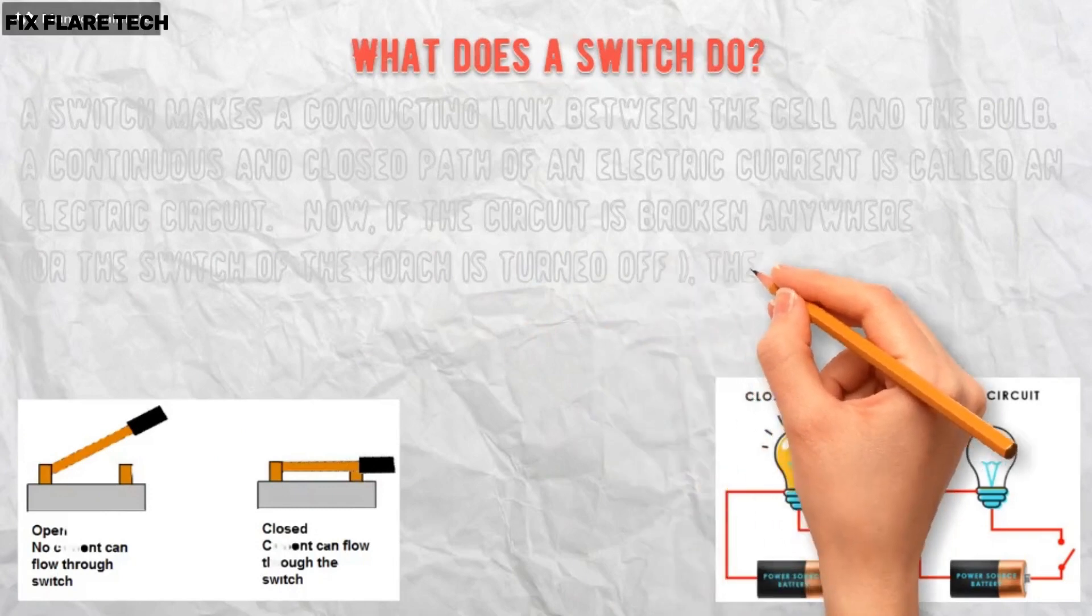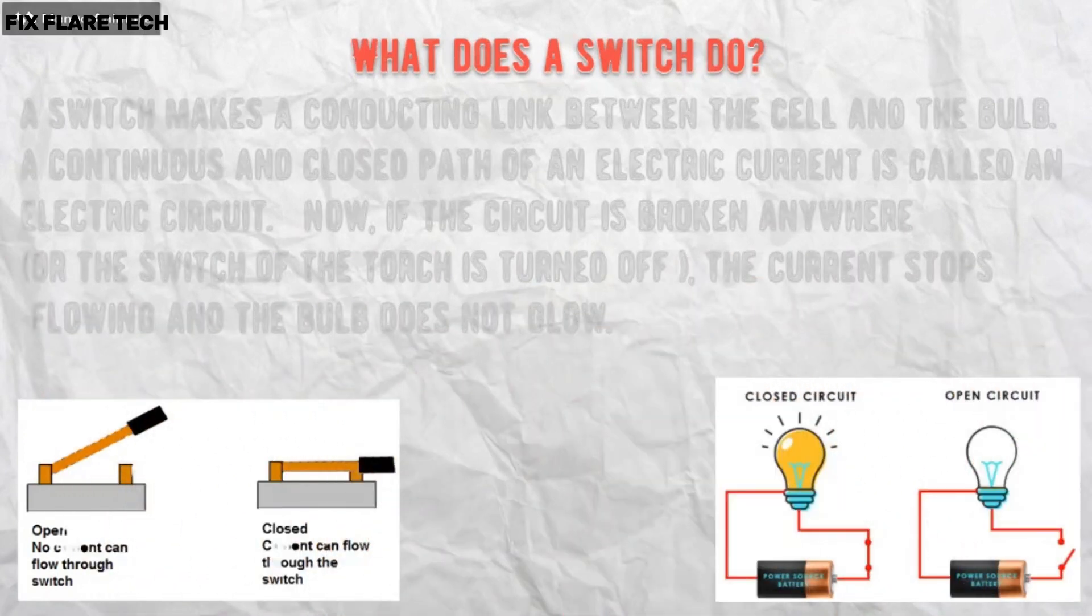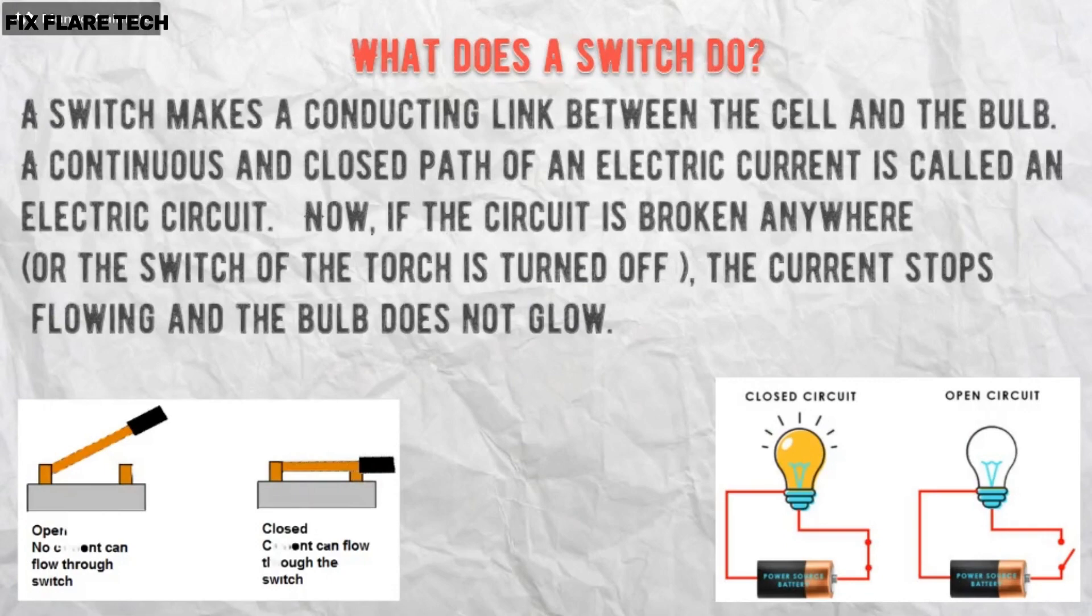Now, if the circuit is broken anywhere, or the switch of the torch is turned off, the current stops flowing and the bulb does not glow.